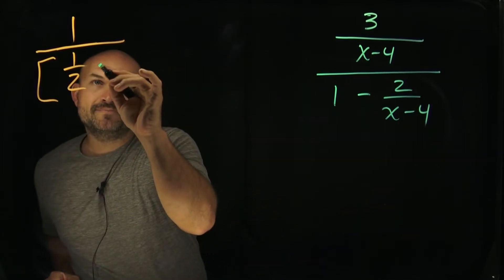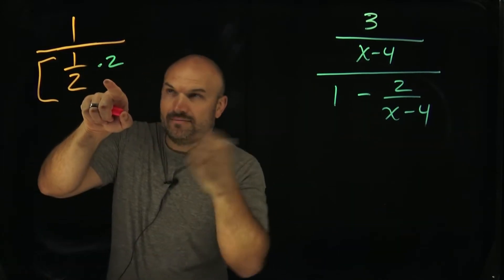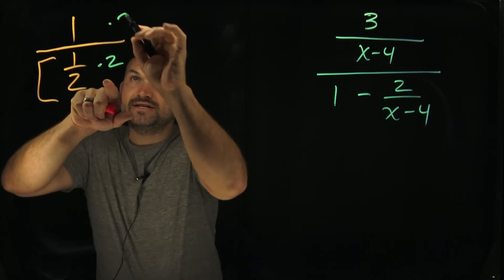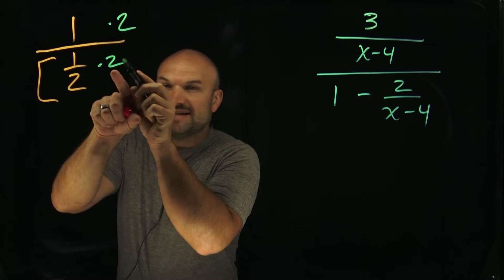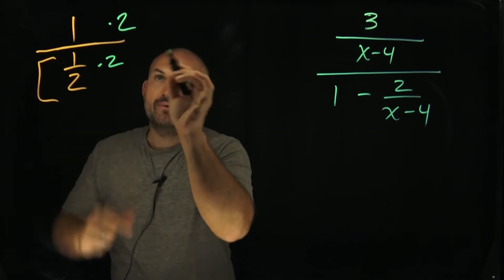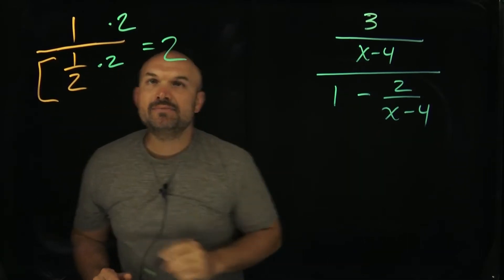So if I multiply by a 2 on my denominator, again, to keep it equivalent in fractions, you have to multiply 2 in the numerator as well. Now, check this out. 2 evenly divides into 2 one time. 1 times 1 is just going to be 1. And therefore, I'm left with a simplified version of 2.